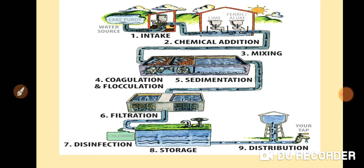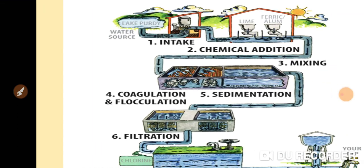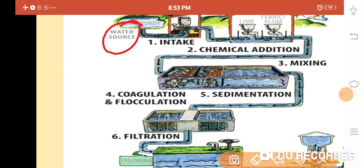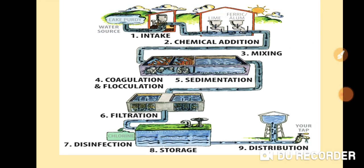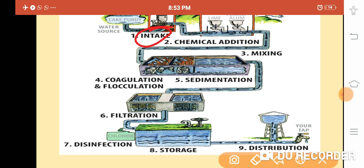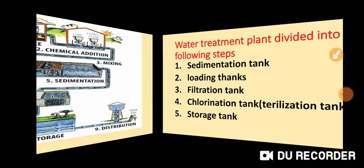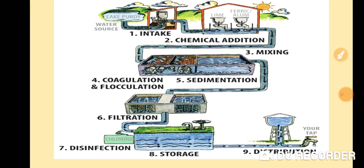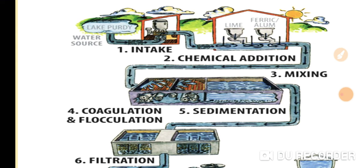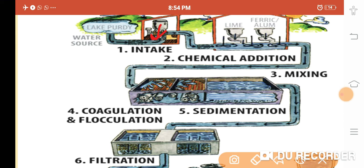Each part of the water treatment plant has a role. From the water source, we store the water in a tank. After some time, sedimentation or decantation takes place — the heavy, dense impurities settle down. Then this water is passed into another container called the chemical addition part.